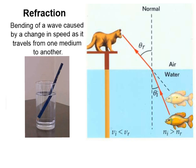Now let's look at another phenomenon that is not reflection. It appears that there's some bending of light waves going on, and indeed that's what's happening. Refraction is the bending of a wave caused by a change in speed as it travels from one medium to another. When a wave travels from air to water or water to air, those are different mediums and light will travel at different speeds in them.